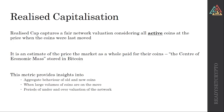The realized cap captures a fair network valuation considering all active coins at the price when they were last moved. It's effectively an estimate of the price the market paid for their coins — the center of economic mass of what's stored in Bitcoin, or the average cost basis for the entire market. It gives a good gauge of the aggregate behavior of both new and old coins. You can see when large volumes of coins are on the move, when people are selling into strength, or drawing things off exchanges. Its most valuable application is picking periods of over and undervaluation of the network.